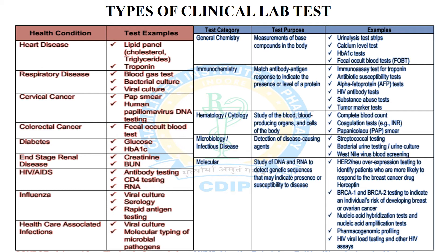These health conditions have various kinds of test examples. For heart disease, tests may include a lipid panel covering cholesterol and triglycerides, or a troponin test. For cervical cancer, tests may include a Pap smear test and human papillomavirus DNA testing. For colorectal cancer, test examples may include the fecal occult blood test. For healthcare-associated infections, tests may include viral culture or molecular typing of microbiology pathogens.